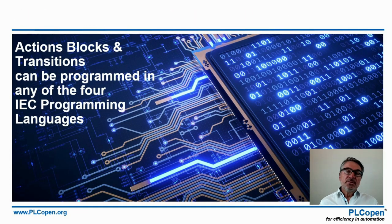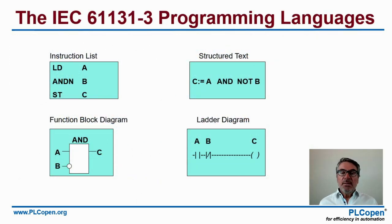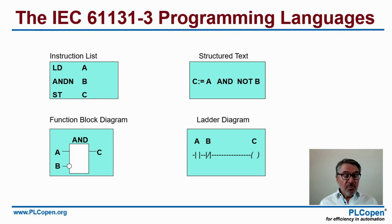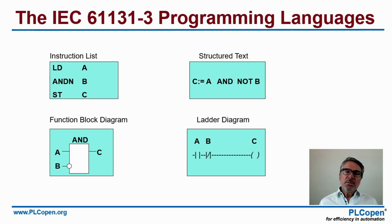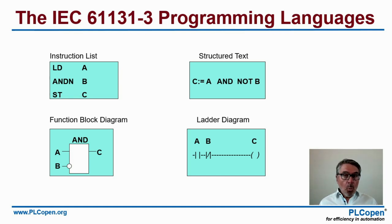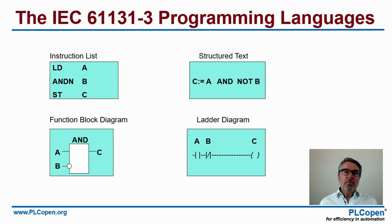The action blocks and transitions can be programmed in any of the four IEC programming languages: two textual — Instruction List and Structured Text — and two graphical — Function Block Diagram and Ladder Diagram. They all represent the same problem in different ways — whichever you're used to, feel most comfortable with, or which suits the problem you need to solve best.